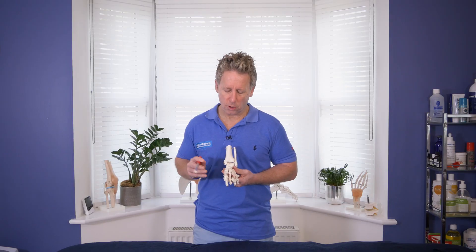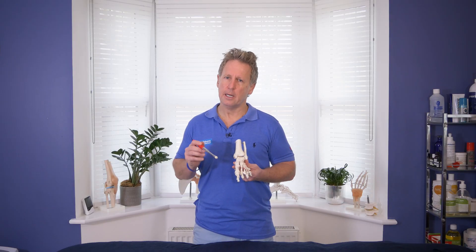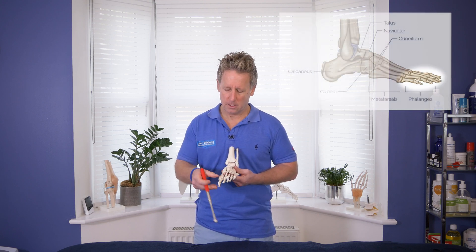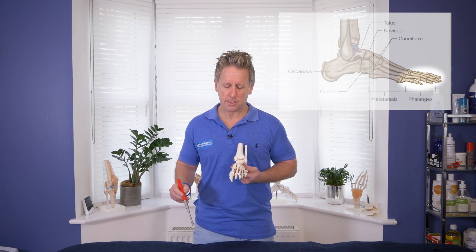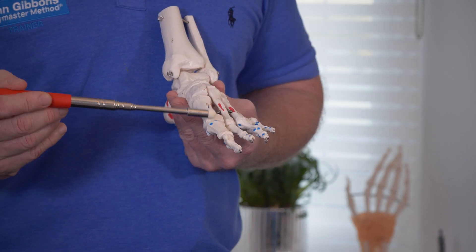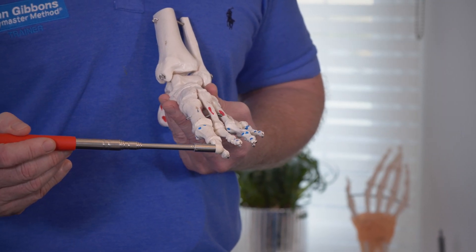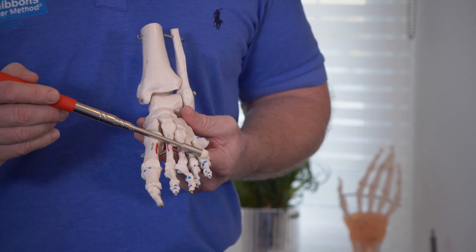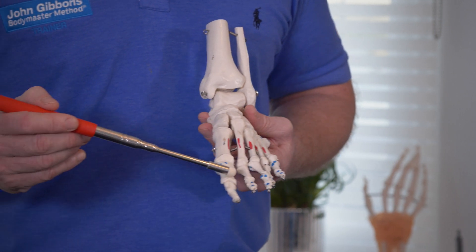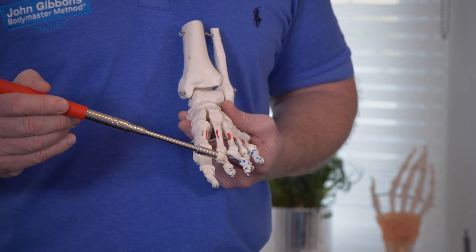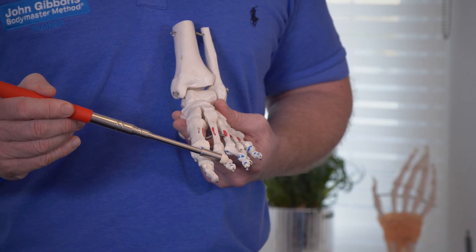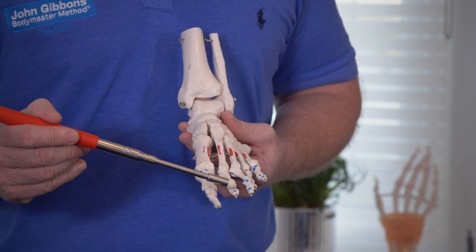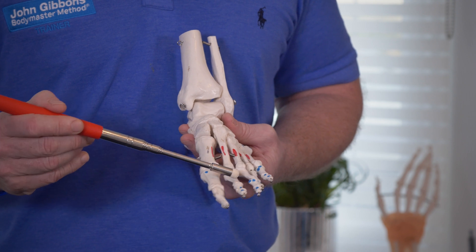Working distally, we have 14 individual phalanx bones that make up the phalanges. On the great toe, which is the hallux, we only have a proximal and a distal phalanx. Whereas on the second, third, fourth, and fifth side, we have the proximal, an intermediate or middle phalanx, and a distal. So we've got three phalanx bones on the smaller digits.